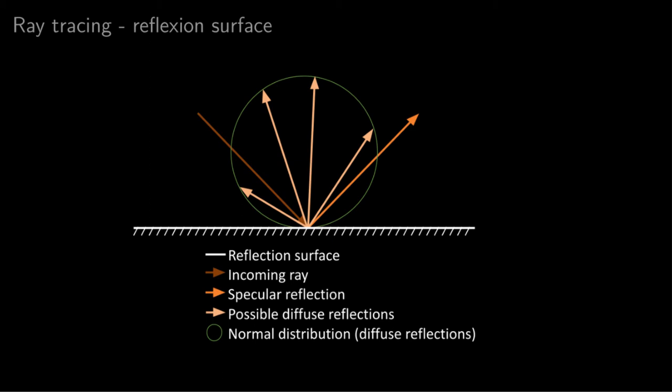This raytracing is a stochastic method, which means that the more rays that we throw from the starting point, the more accurate the result will be. But, of course, that also comes at a higher computation cost. Usually we throw an amount in the ballpark of 5000 rays from the starting point. That ends up multiplying a lot when those rays reflect again and again.